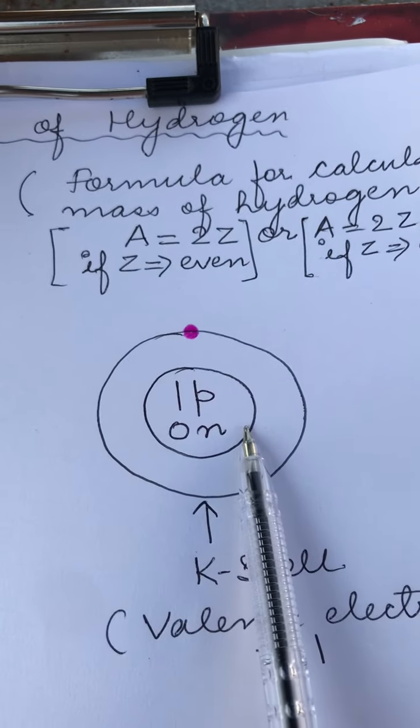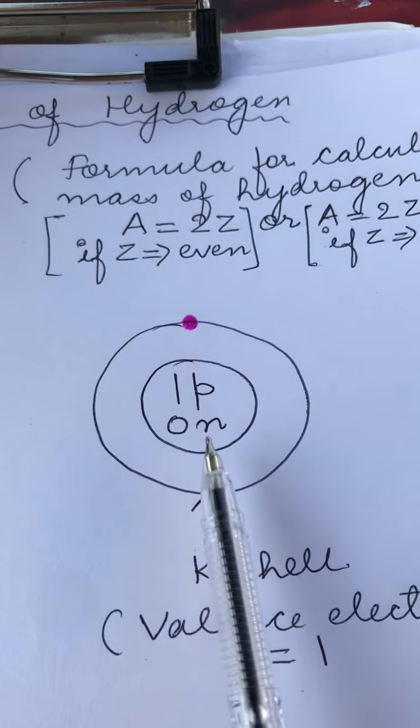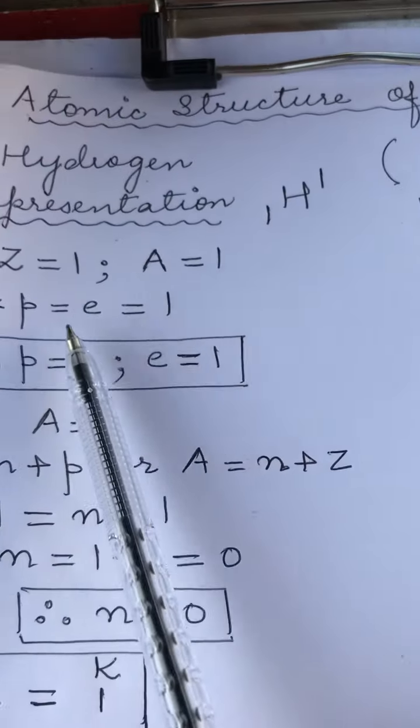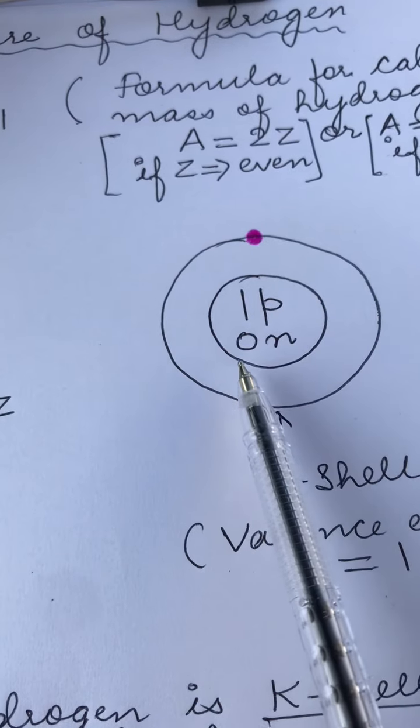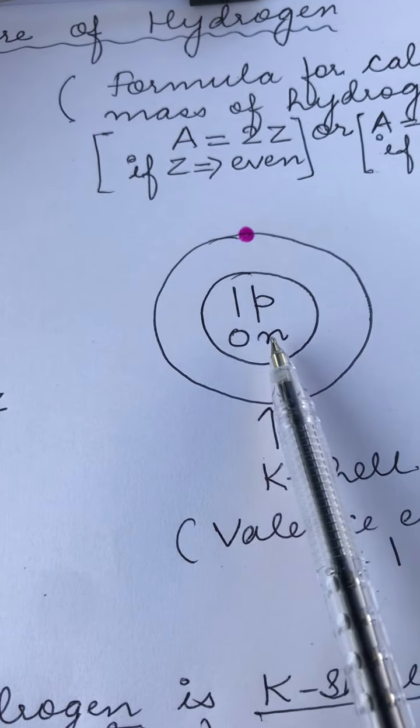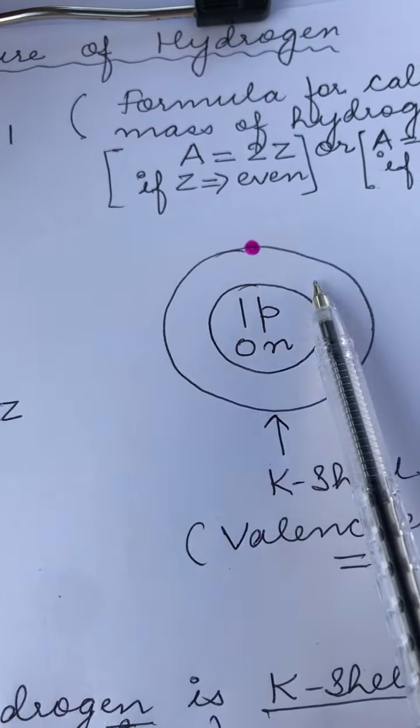In the center, we have nucleus and inside the nucleus, we have protons and neutrons. Since the number of protons is 1 and the number of neutrons is 0, so we write 1p for protons, 0 neutrons for the number of neutrons, and in the first shell...